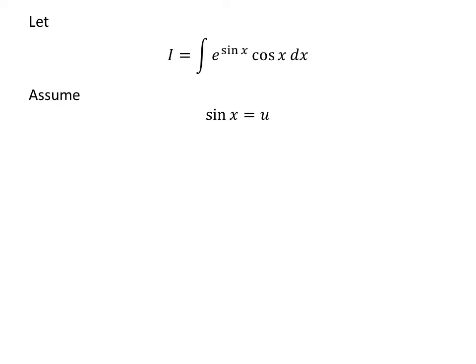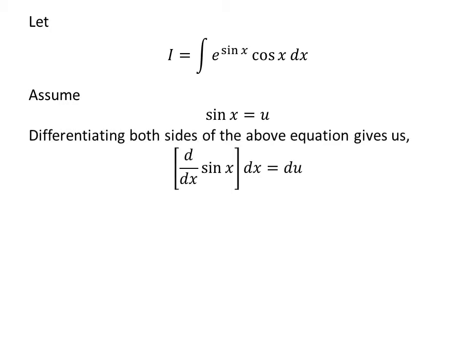Let us assume sin x equals u. Taking the differential of both sides gives us the derivative of sin x with respect to x times dx equals du. As the derivative of sin x is cos x, we have cos x dx equals du.